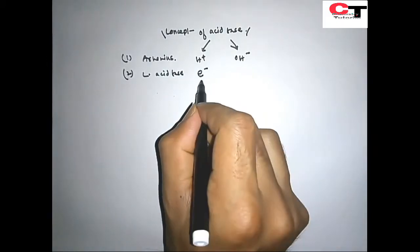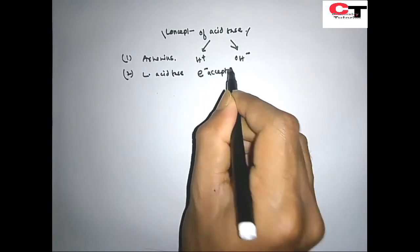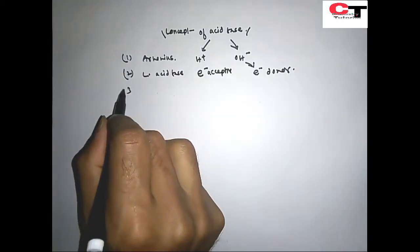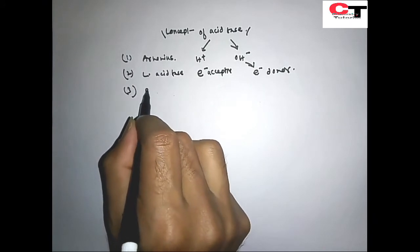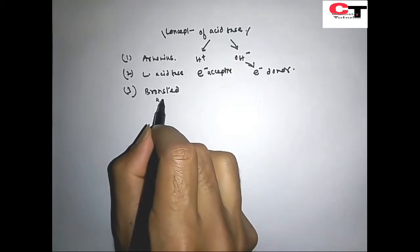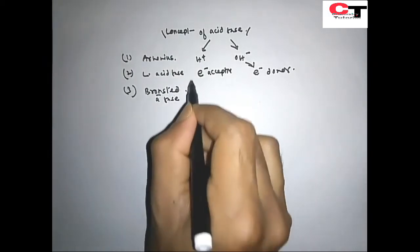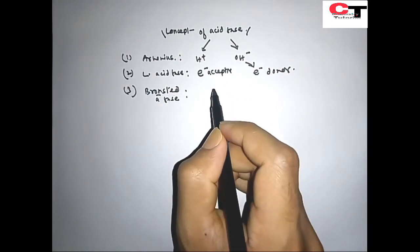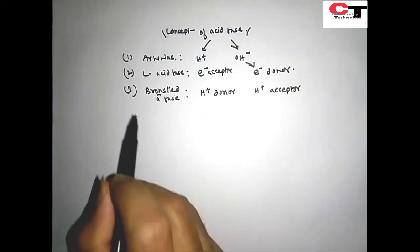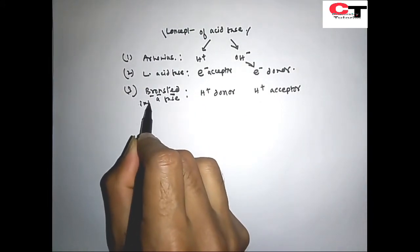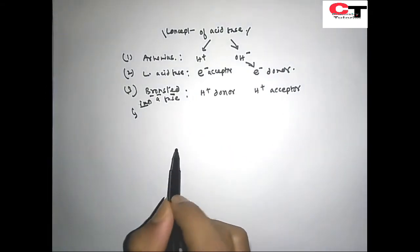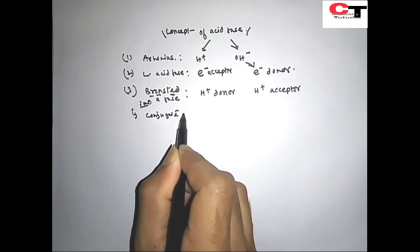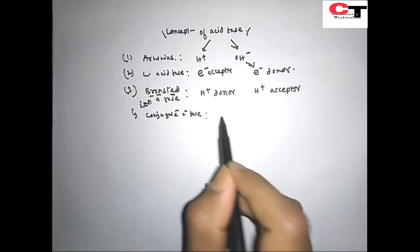According to Lewis acid-base concept, a base is an electron donor. The third concept is the Bronsted-Lowry acid-base concept. This Bronsted acid-base concept is very important — it also explains the conjugate acid-base mechanism.